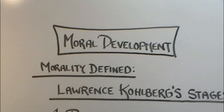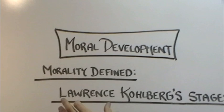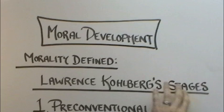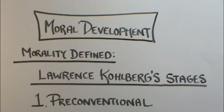Continuing in our unit on developmental psychology, we are going to talk about moral development. The most famous psychologist here is a man named Lawrence Kohlberg, and what he actually does is talk about this issue of morality.